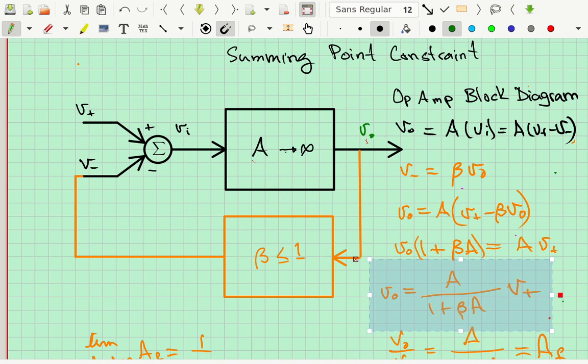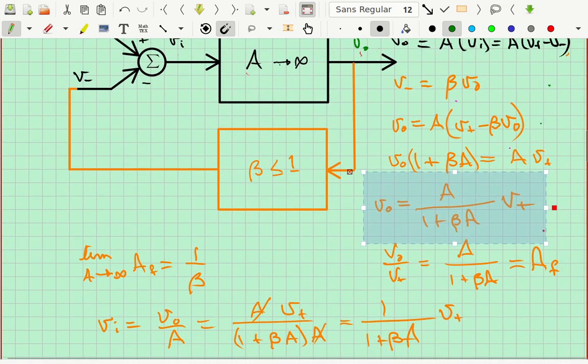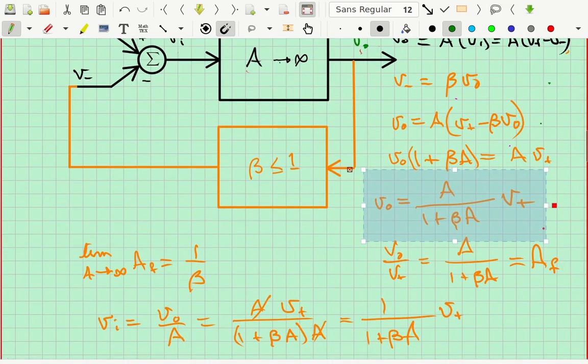And if we wish, we could solve for the transfer function or the gain of this circuit after feedback. I'm calling that A sub F. And that would be Vout over V plus, which is A over 1 plus beta A. That's just dividing both sides of the highlighted equation by V plus.